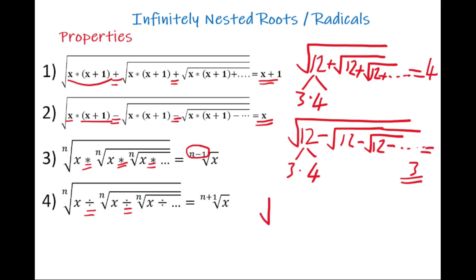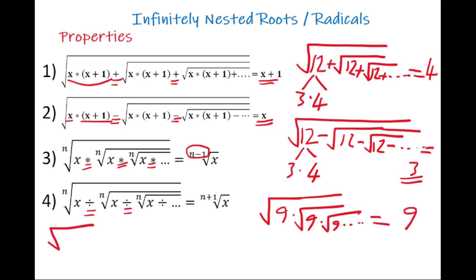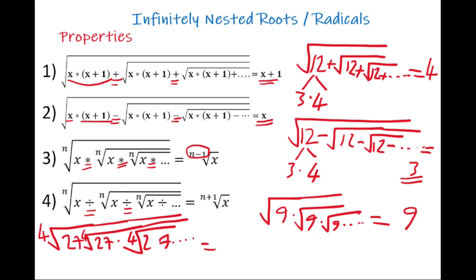For the third case, square root of 9 times square root of 9 times square root of 9 going to infinity: because we have root degree 2, we subtract 1, giving degree 1, so the result is just 9. For a fourth-degree root of 27 times fourth-degree root of 27 going to infinity, we decrease the root degree by 1, giving the third root of 27. Since 27 is 3 cubed, the result is 3.